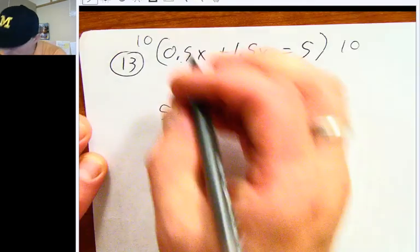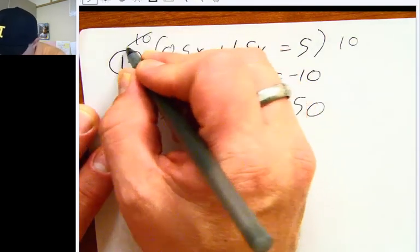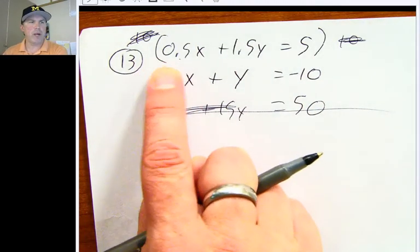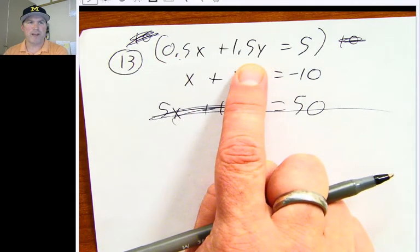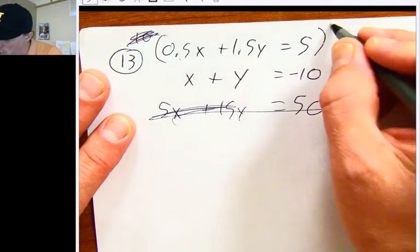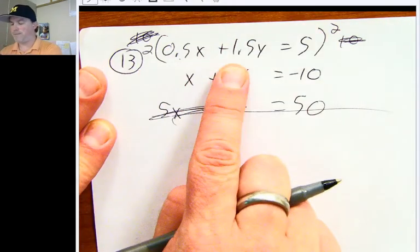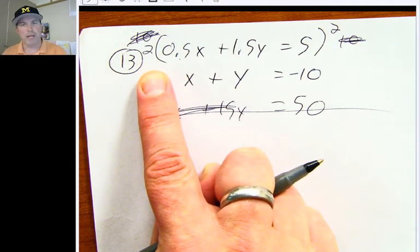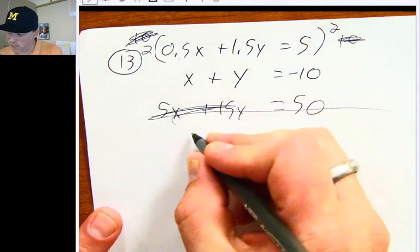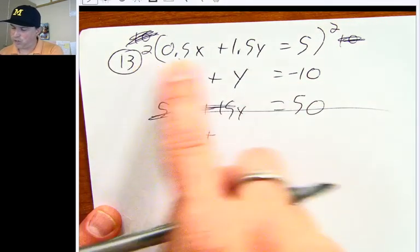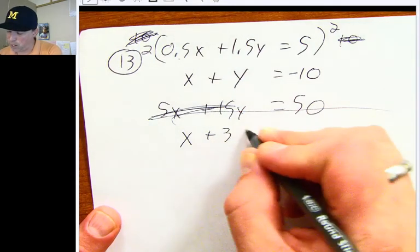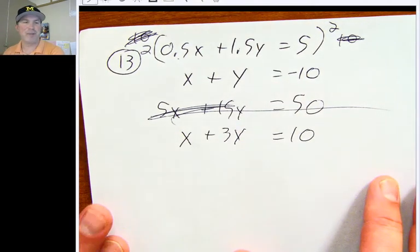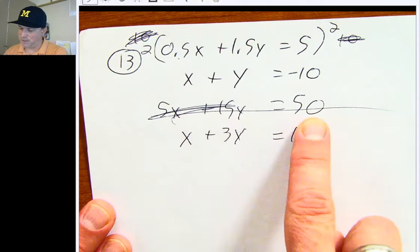Another technique, what could you multiply 0.5 by and 1.5 by to get rid of the decimal in one shot? I know that if I multiply 0.5 by 2, 2 times 0.5 is 1. So 2 times 0.5 is just x plus 2 times 1.5 is 3y, and 2 times 5 is 10. This looks a little bit nicer looking than using this 5x plus 15y.